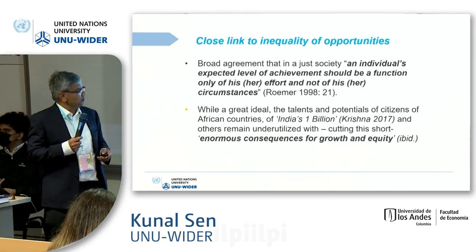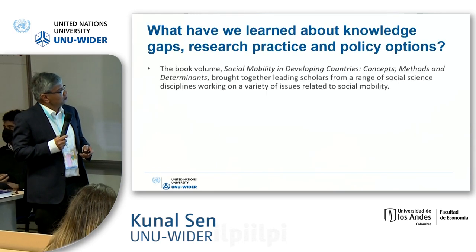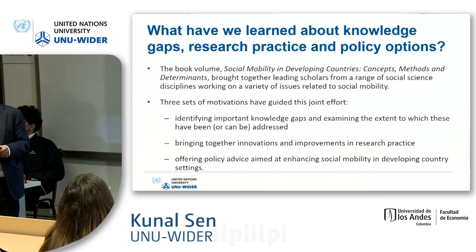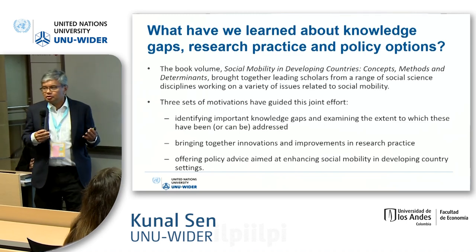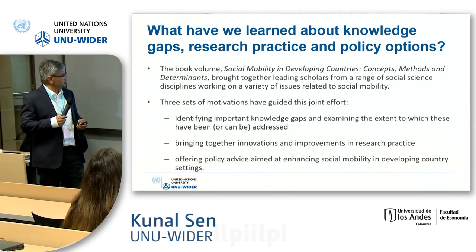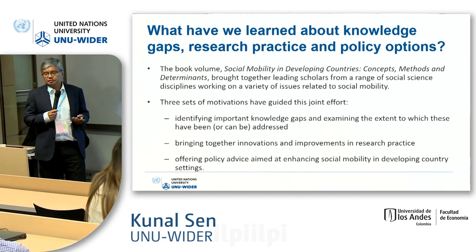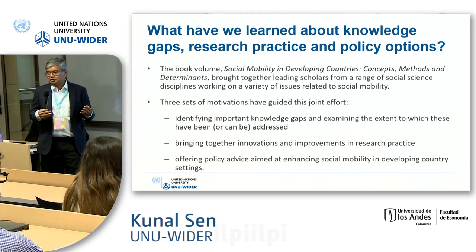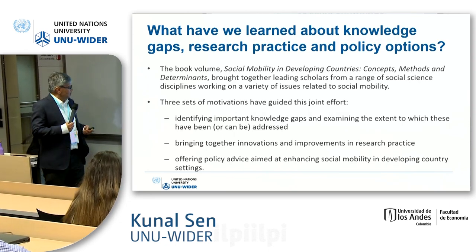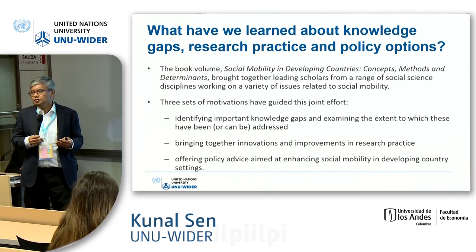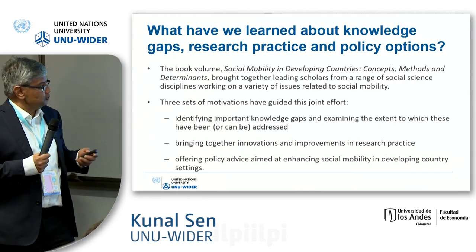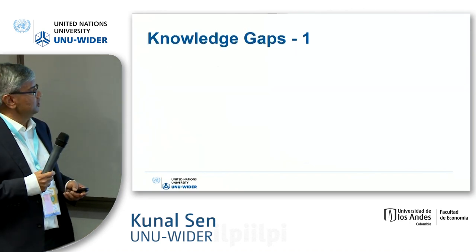Now let me tell you what we learned from this book. I'm going to speak about three different areas: knowledge gaps, research practice, and policy options. The first is what are we still not very clear about, especially for low-income countries. The second is thinking about research practice methods and interdisciplinary conversations. The final part is thinking about policy advice and how we should advise policymakers to think of social mobility in their own country context.